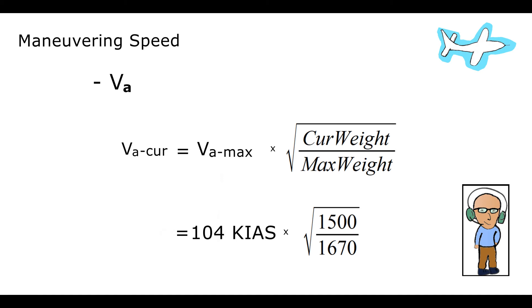If the current weight of the plane is 1500 pounds, we divide that by the max gross weight, which is 1670 pounds for C152s.